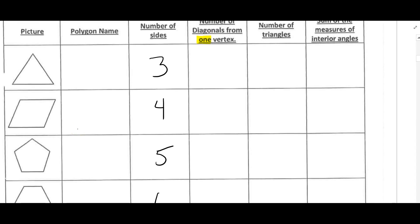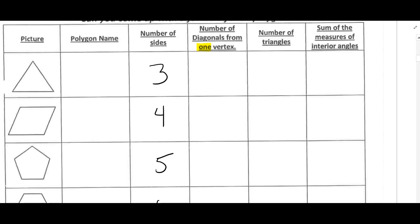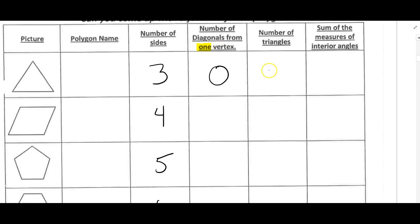Now we're going back to our pictures to draw the diagonals from one vertex. In a triangle, there's no way to draw a diagonal because a diagonal connects any two non-consecutive vertices. In a triangle, every vertex is right next to the other two, so there are zero diagonals from any vertex. The number of triangles is one, and the sum of the interior angles is 180 degrees.